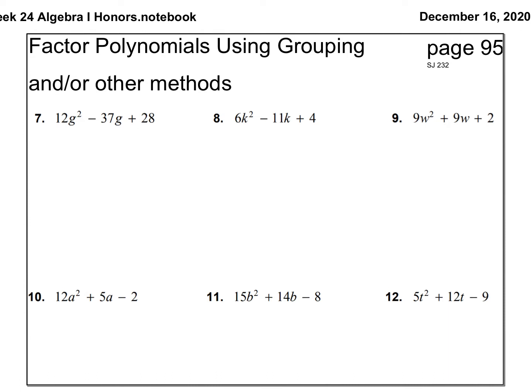Looking at number 7, I do not have a common factor — 12, negative 37, and 28 do not share a common factor. I'm not going to give you numbers that big on a test, but we're going to try this problem and I'll use a calculator. Since I don't have a common factor: a is 12, b is negative 37, c is 28. We're going to use the method of grouping.